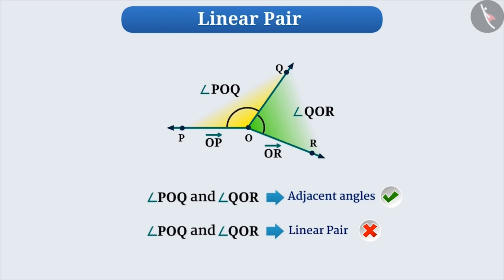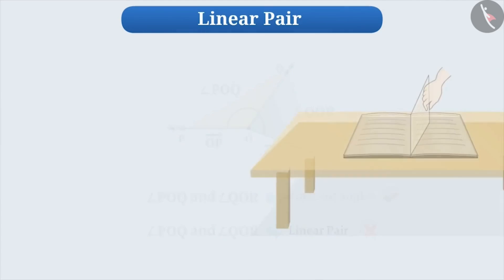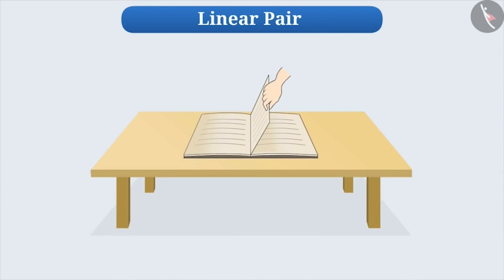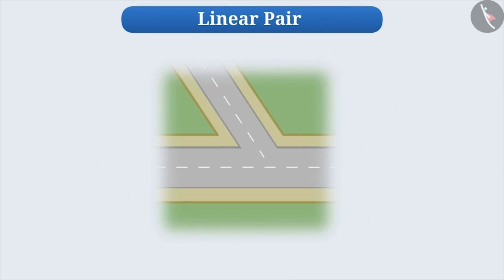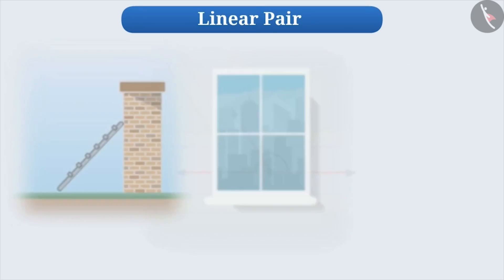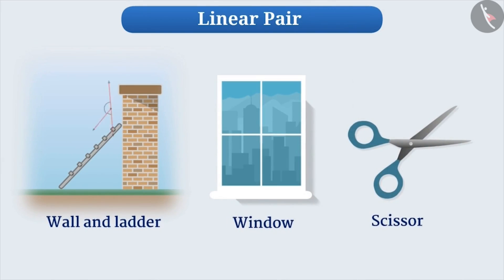You can find linear pairs in many situations. For instance, when a book is placed on a table and one of its pages is open, then the angles formed on either side of it are linear pairs. When two roads intersect, they form a linear pair. Similarly, you can identify linear pairs in the following examples.